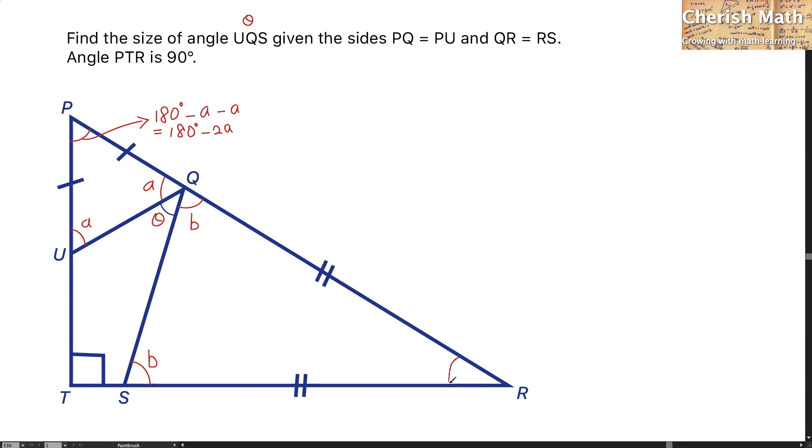And for the angle of this part, it will be 180 degrees minus 2B by using supplementary angles on triangle QRS.